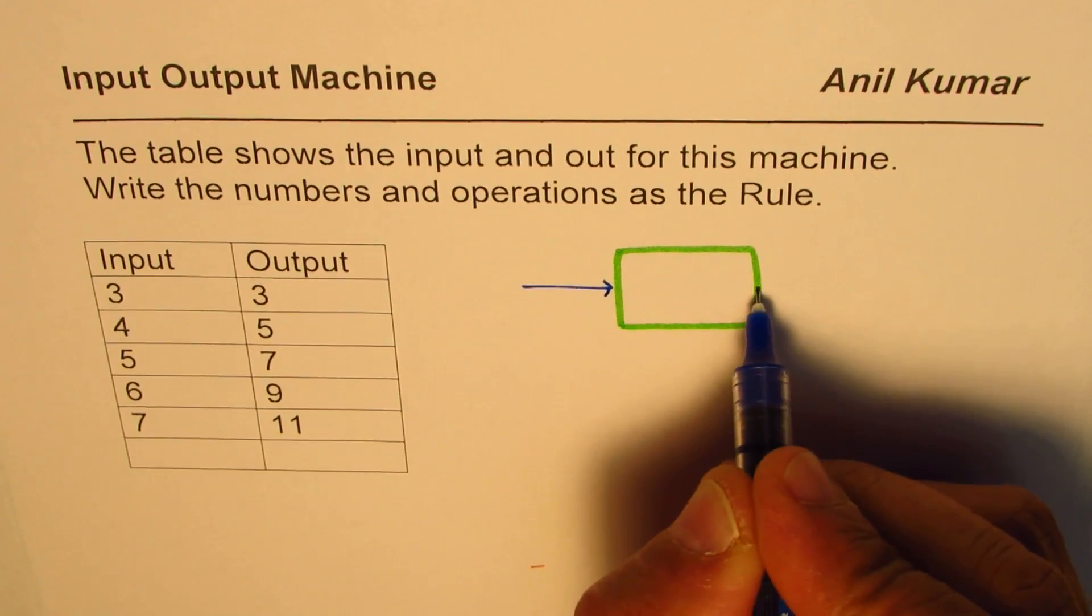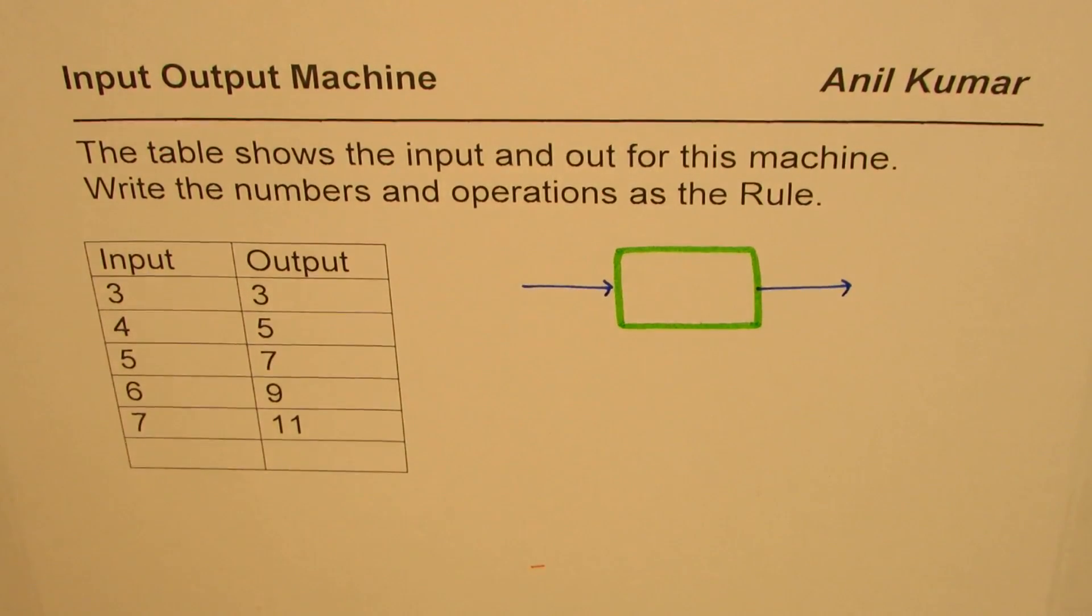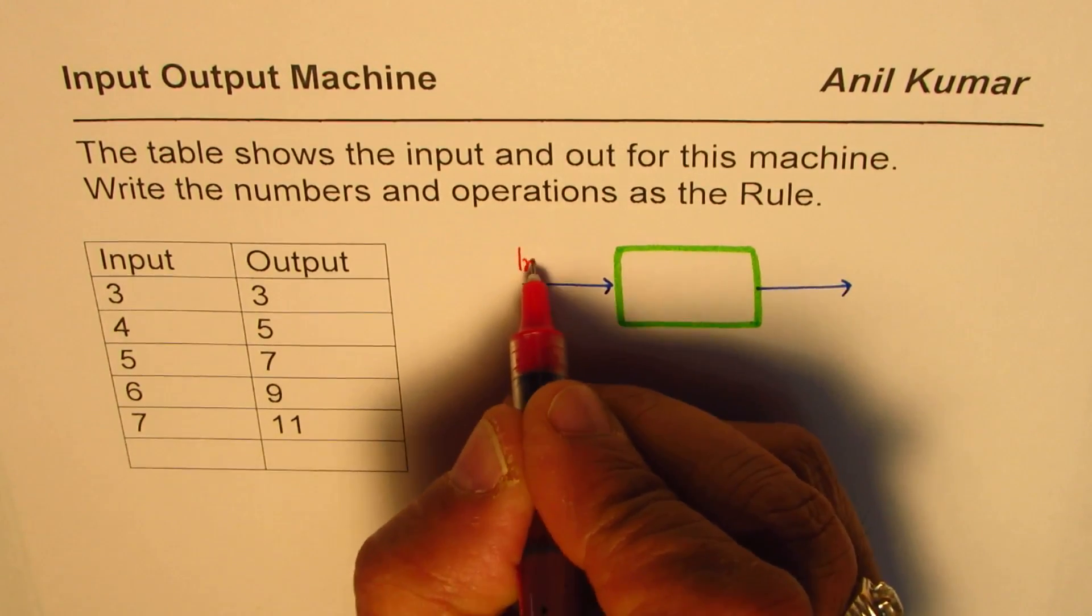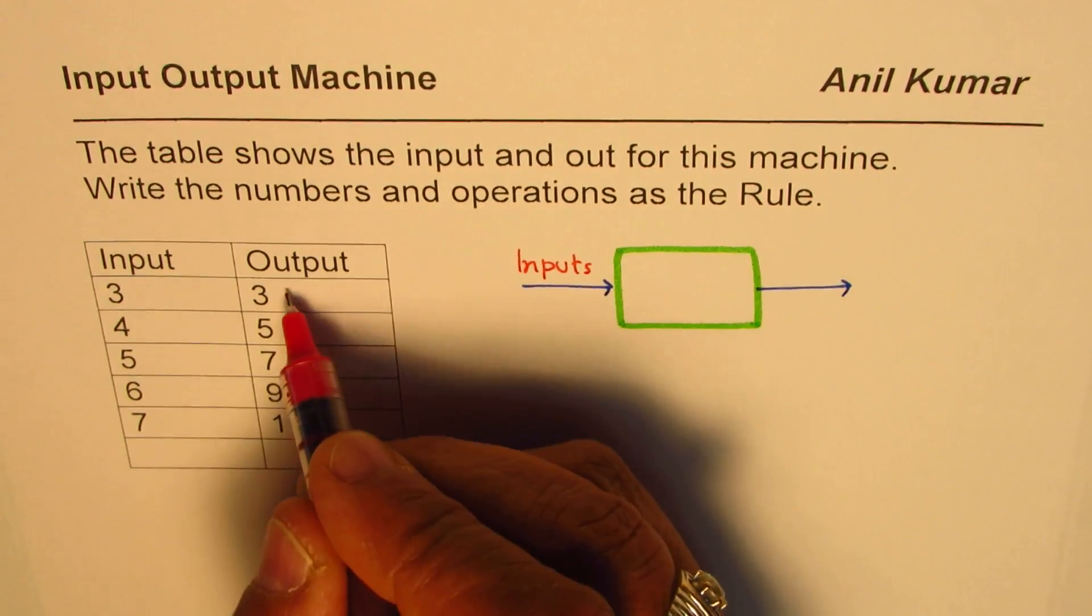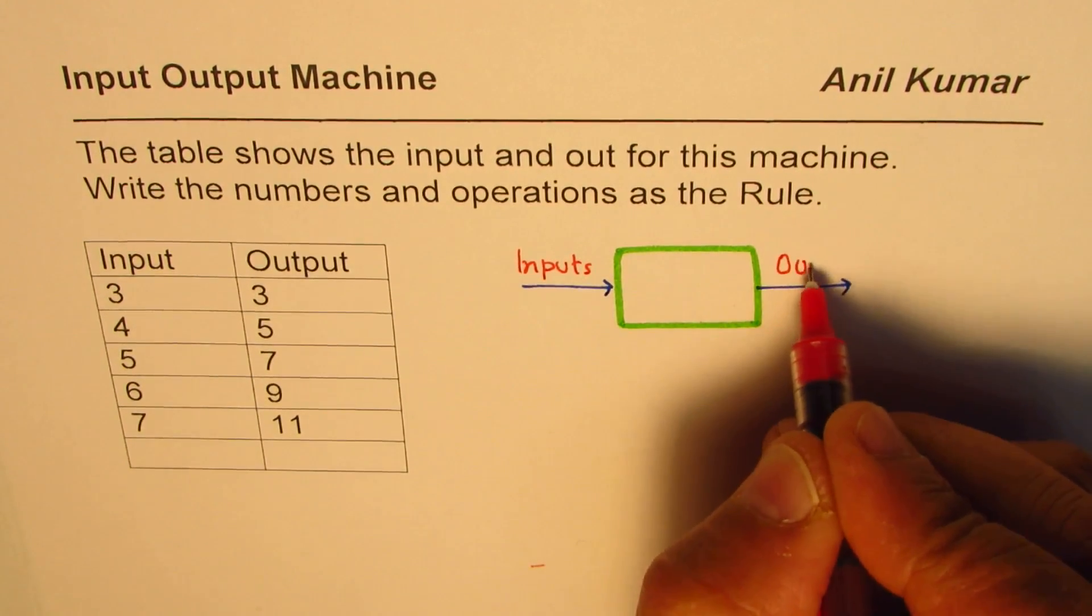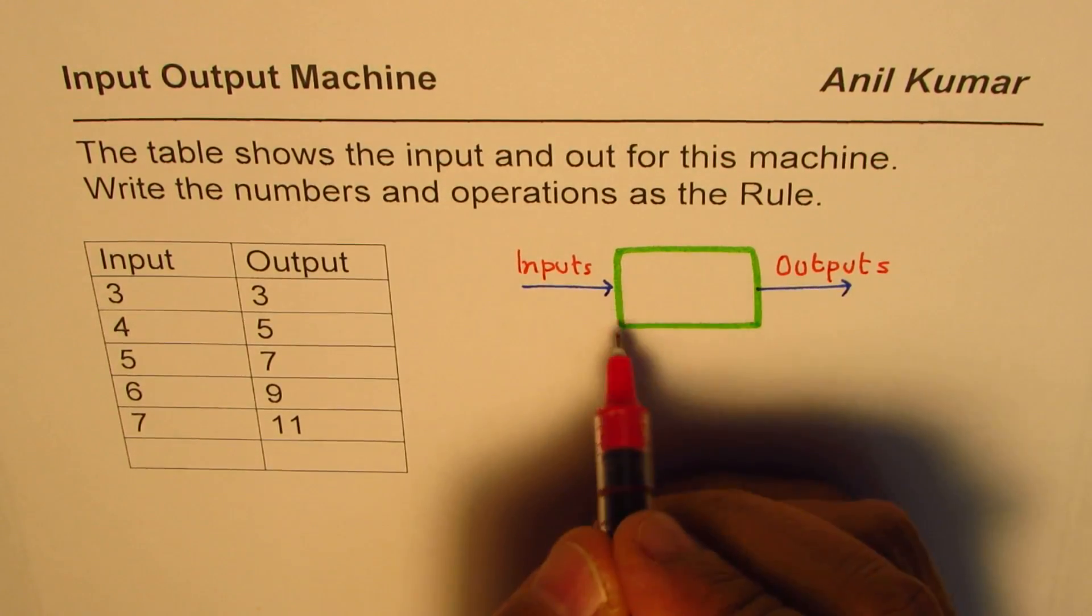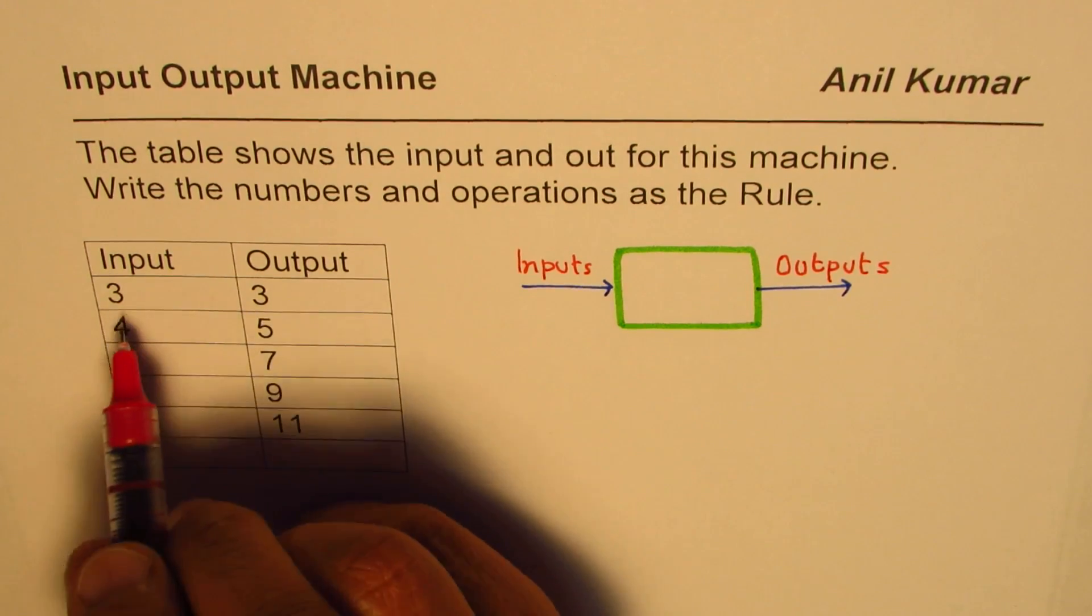Inputs could be the numbers as given here - let's say inputs - and the outputs are the numbers given in the second column, we call them outputs. The machine performs some operations to convert these numbers from input to output.